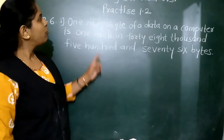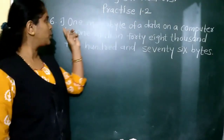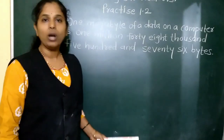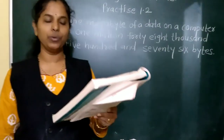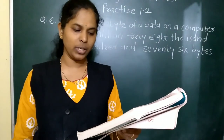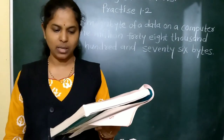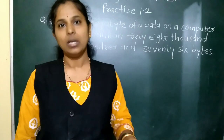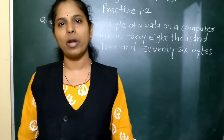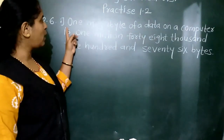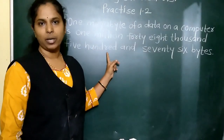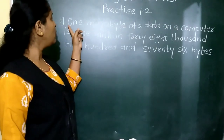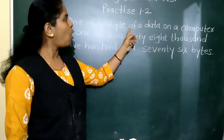Now students, from Practice 1.2, question number 6. In question number 6, what we have to do is we have to read the following stories about large numbers and write each number using numerals. We have to write the number for the given word form.